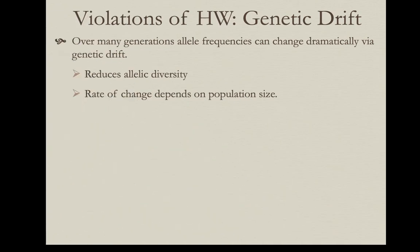Genetic drift can influence changes in allele frequencies over many generations even in large populations, but in small populations we can see pretty dramatic changes in allele frequencies due to genetic drift. Genetic drift reduces allelic diversity, but not in the same predictable manner that natural selection does. Genetic drift is also called random drift — certain alleles increase in frequency, others decrease, and sometimes one allele will go to fixation, meaning all other allelic combinations will go to extinction.